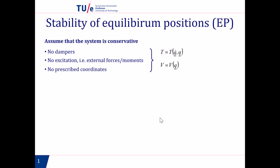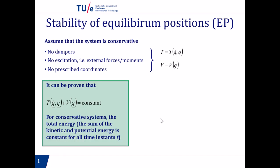We can say that the sum of the kinetic energy and the potential energy is constant. And this sum is what we call the total energy of the system.